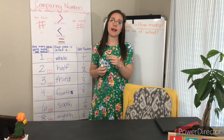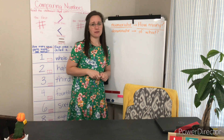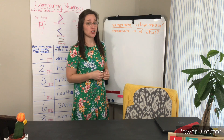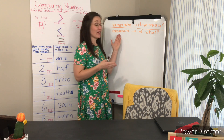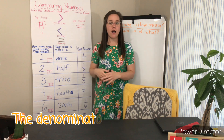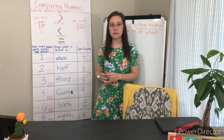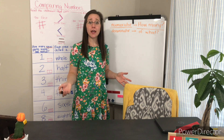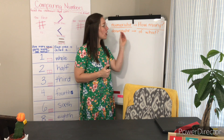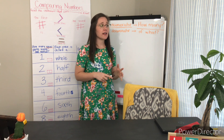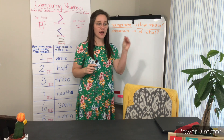Now, the other part of that learning target is really important. It said, I can compare fractions with like denominators. Let's talk about what that means. What is a denominator? It's the digit on the bottom of your fraction. It's the digit that tells you the size of your pieces, or how many pieces you need to make one whole — it's the part of your fraction that names those pieces. So if my denominator is three, that means those pieces are thirds, because I need three to make a whole.